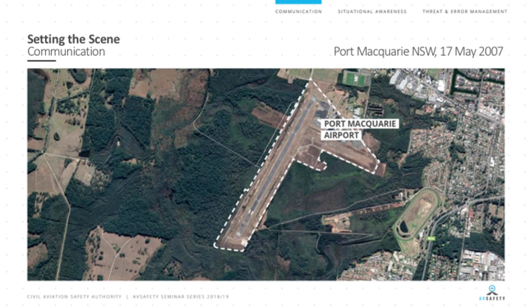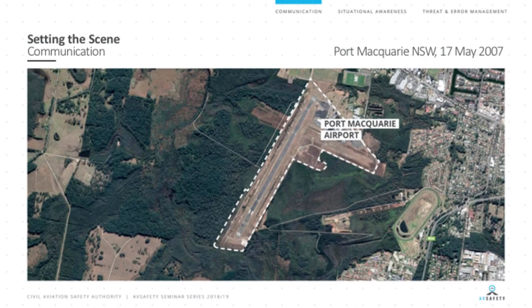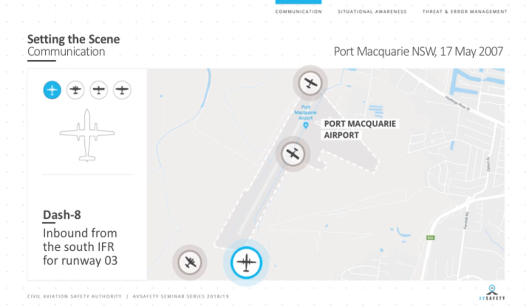Let's start with a case study — an incident that occurred at Port Macquarie Airport in 2007. Port Macquarie is a regional aerodrome on the mid north coast of New South Wales, with a large flying school and RPT service from Sydney, two runways — a sealed runway and a cross strip — and suburbs now encroaching on the airport boundary. There are four aircraft in our scenario, not exactly where depicted but giving relative directions to help build a mental picture.